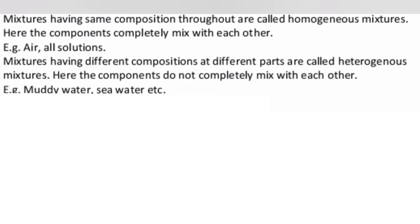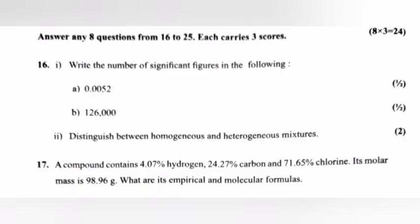Here the components do not completely mix with each other. Examples: muddy water, sea water, etc. Question 17: A compound contains 4.07 percent hydrogen, 24.27 percent carbon, and 71.65 percent chlorine. Its molar mass is 98.96 grams. Find its empirical and molecular formulas.